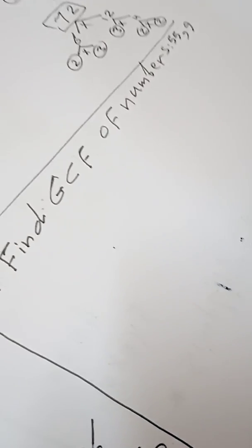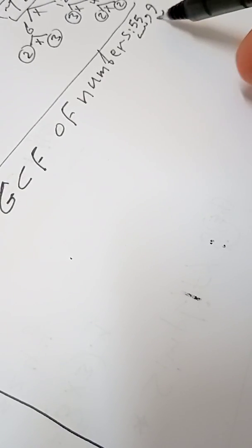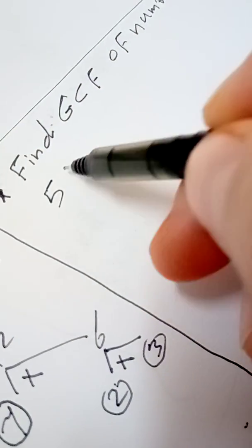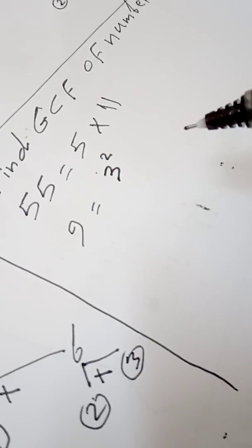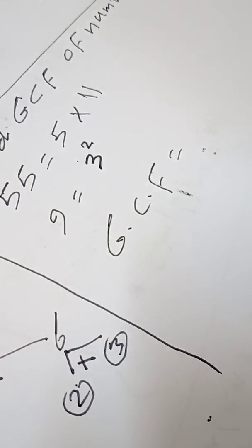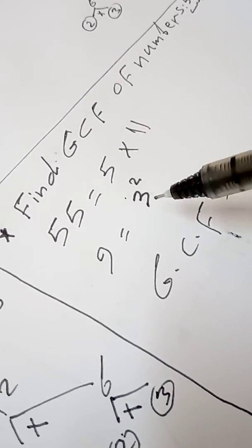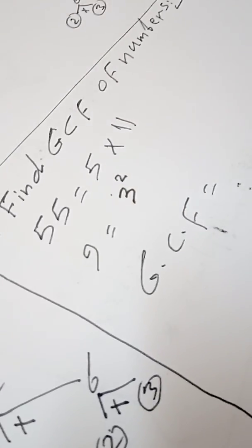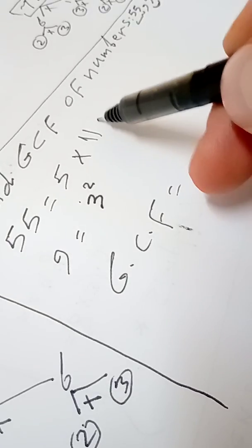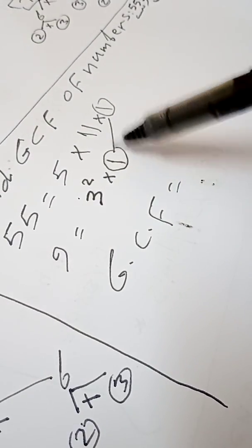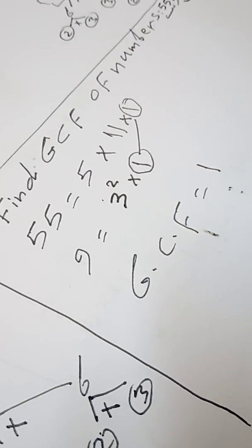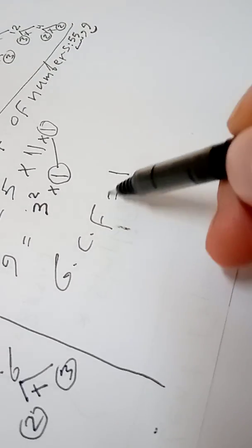The last example: find the GCF of 55 and 9. 55 equals 5 times 11 — both prime. 9 equals 3 times 3, which is 3². Now as you see, there is no common factor: 5 is in 55 but not 9, 11 is in 55 but not 9, and 3 is in 9 but not 55. But as you know, 1 multiplied by any number equals that number — so the common factor is 1. GCF equals 1, and 1 is the GCF for all numbers.